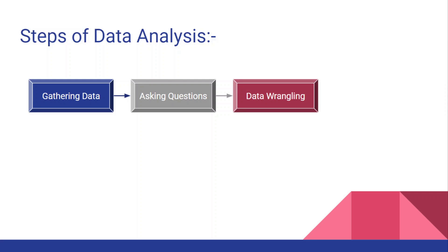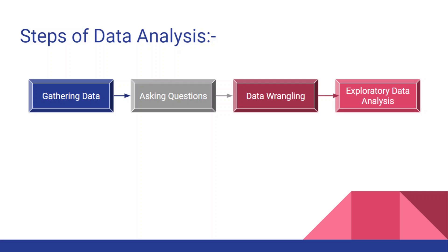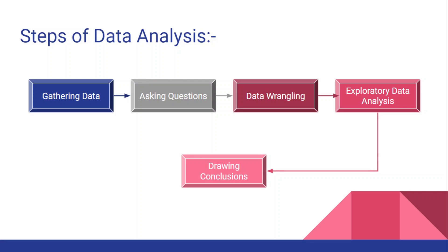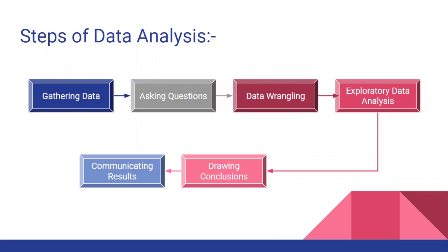The next step is to wrangle with your data. In this step you take a close look at your data, you look for mistakes, missing values, and many more — basically data pre-processing. Next step is exploratory data analysis, where you dive deep into your data for full-fledged analysis. The next step is drawing conclusions — you note them down. Last but not least is communicating results, where you communicate to your team members or boss that you have done this analysis and they need to take these steps.